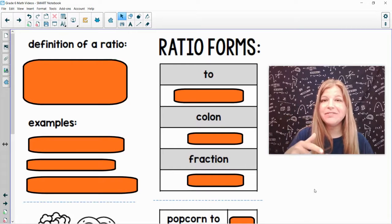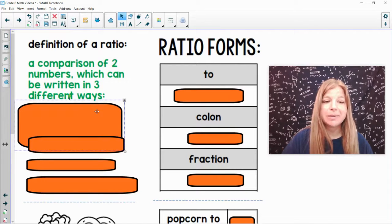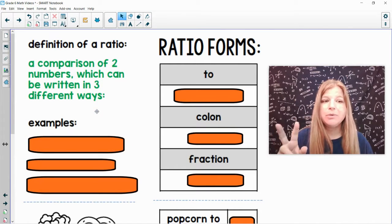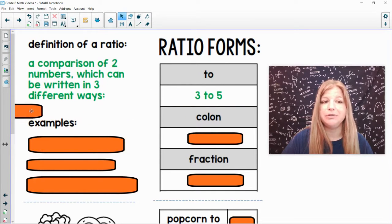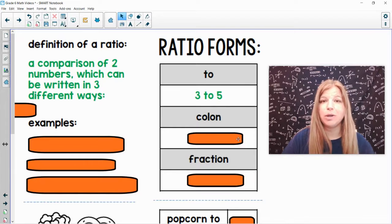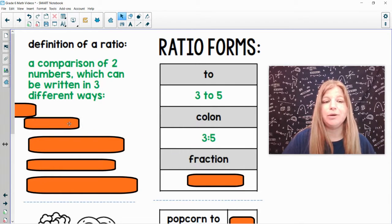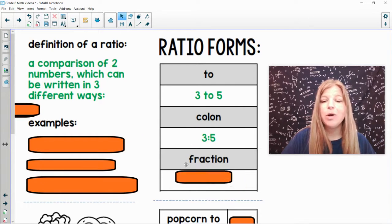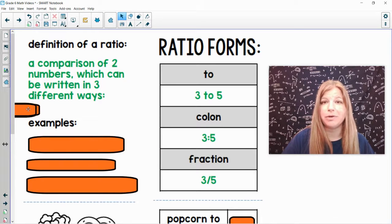Hey guys, in this lesson video we're learning how to write ratios and simplify them. So first off, the definition of a ratio is a comparison of two numbers, which can be written in three different ways. You can use the word 'to', so you can say three to five. You could use a colon, which is the double dot, and you can write three to five that way, or you can put it in fraction form, three over five.